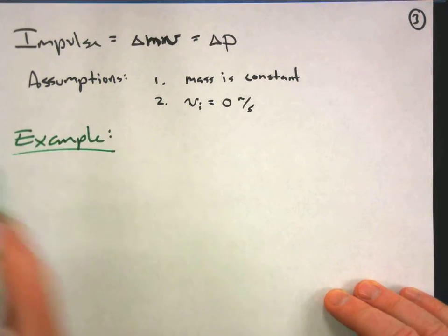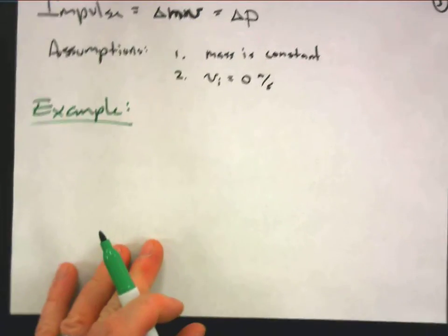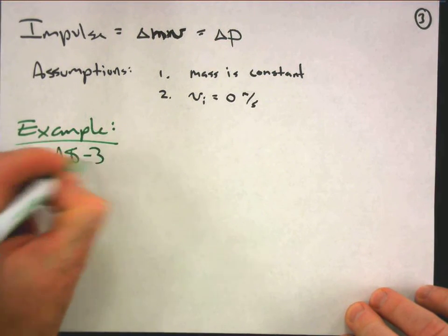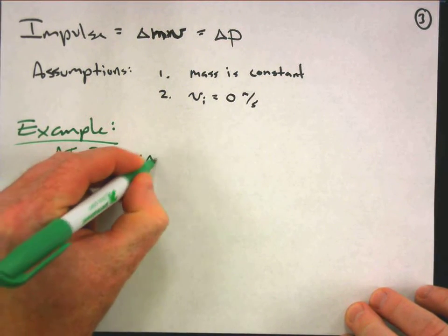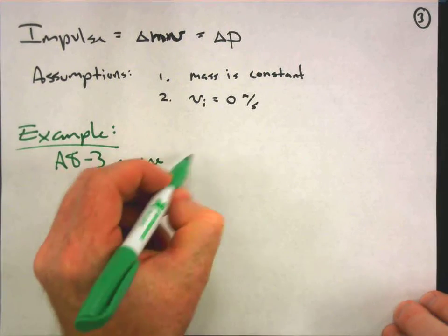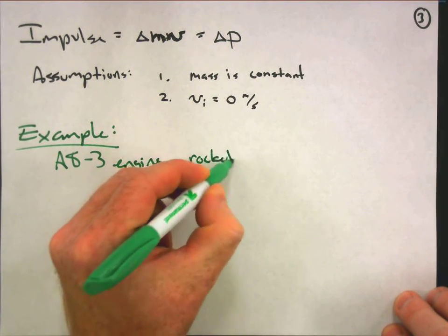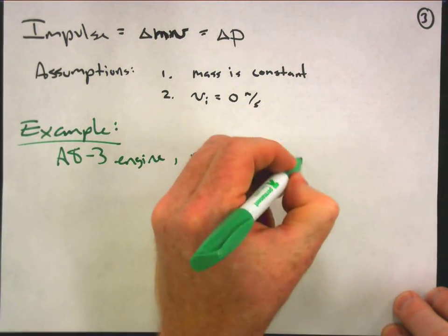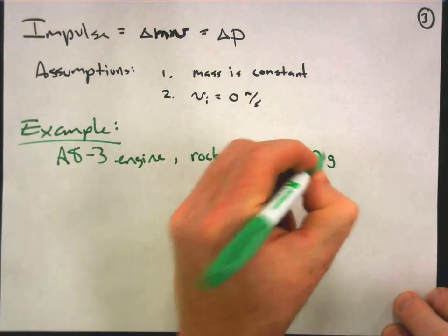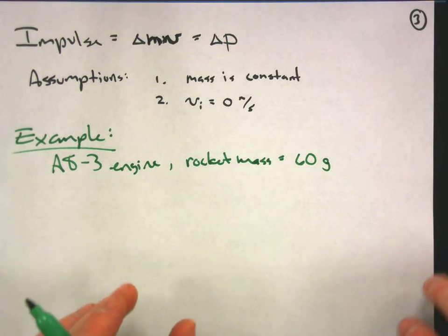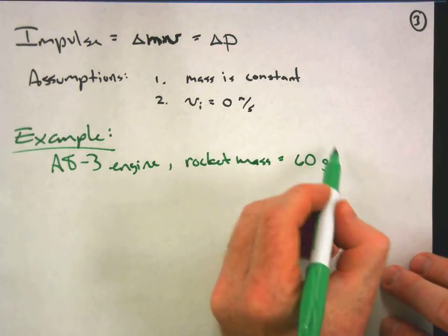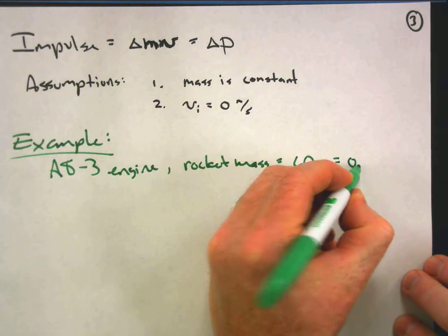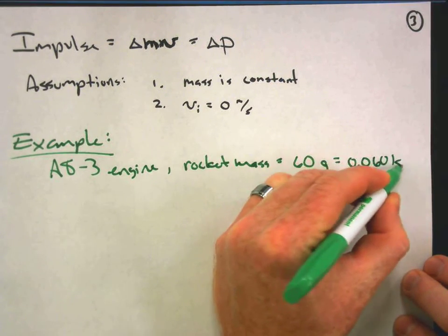Let's look at an example. Let's take an A8-3 engine and a rocket with a mass of, let's say, 60 grams. It doesn't sound like much, rockets are supposed to be pretty light, but that's including the engine, that's the total mass. So I'm going to convert that to kilograms, 0.06 kg.